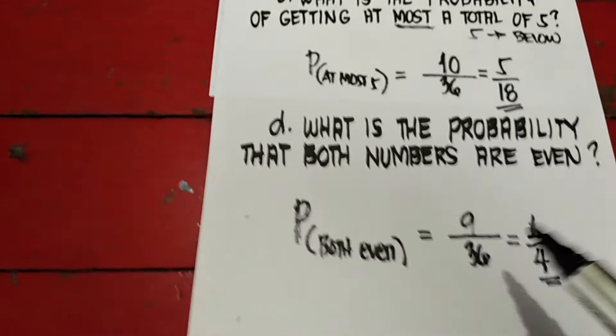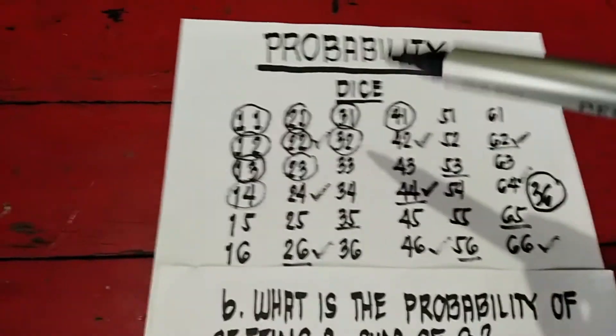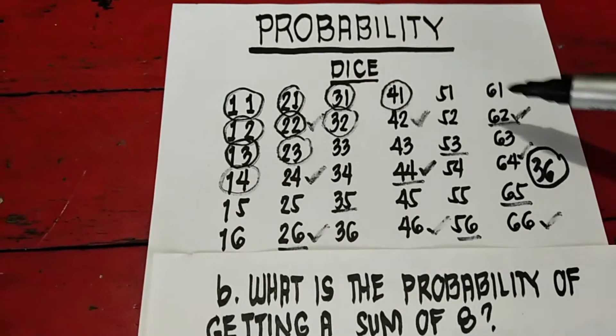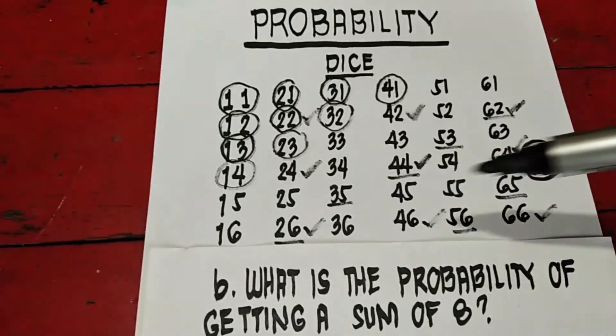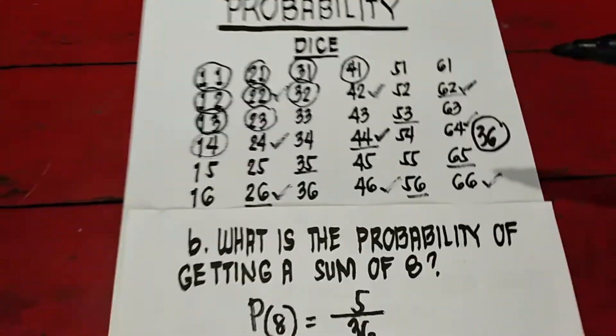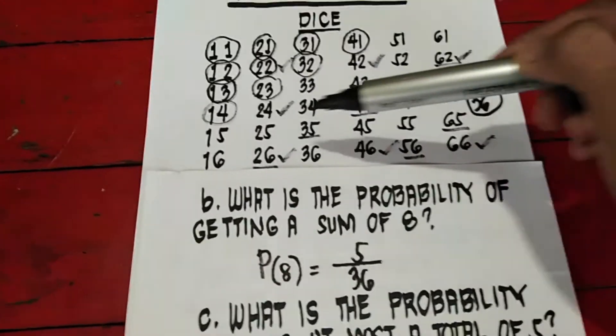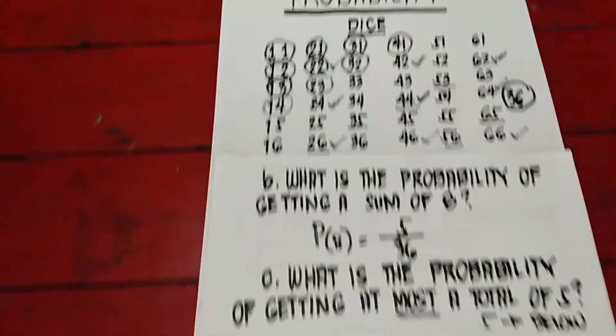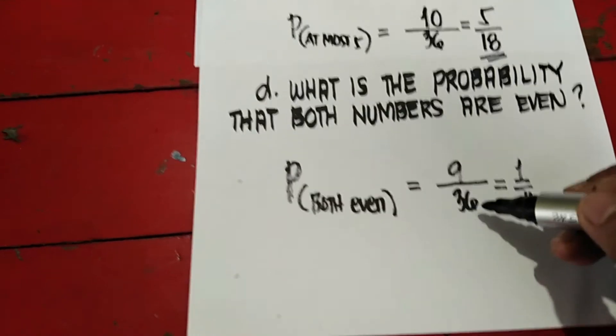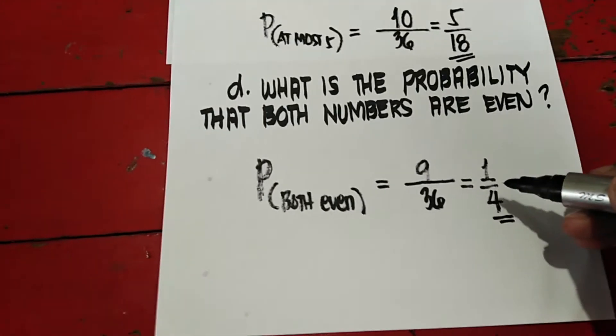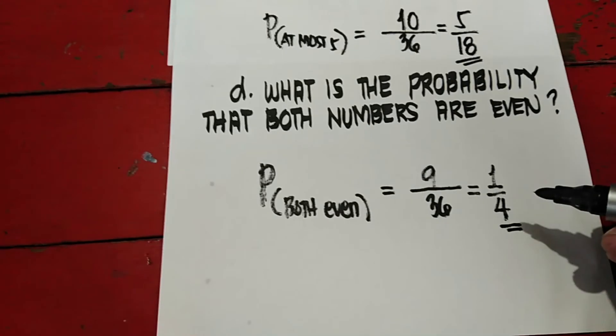Ulitin ko. Probability of both numbers are even. Titignan mo lang dun kung ano yung pariyas na even. Yung 2, 2, even number. 4, 2, 6, 2. 2, 4. 4, 4. 6, 4. 2, 6. 4, 6. And 6, 6. So there are 1, 2, 3, 4, 5, 6, 7, 8, 9. Ang sagot natin is 9 over the total, 36. And lowest term is 1 fourth.